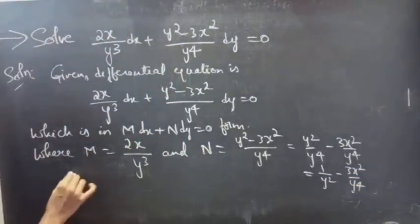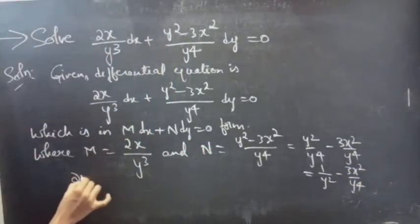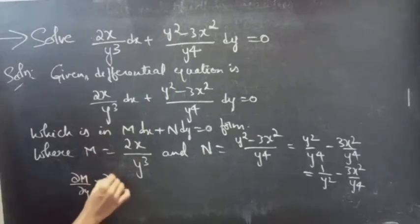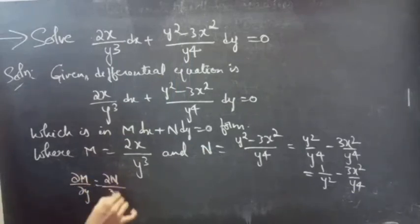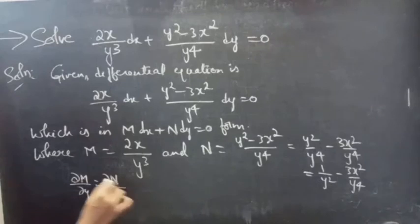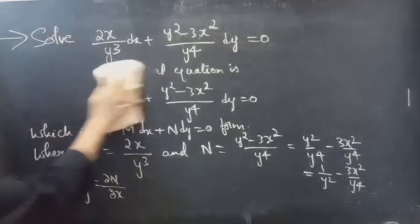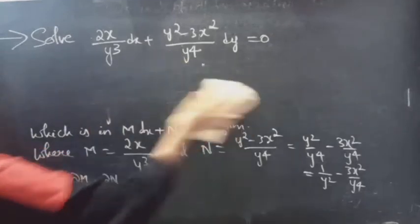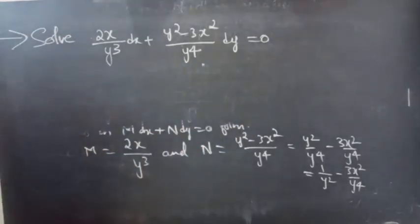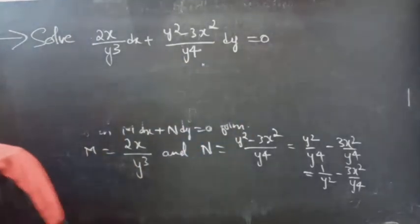If the partial derivative of M with respect to y is equal to the partial derivative of N with respect to x, then we can say that the given differential equation is an exact equation.